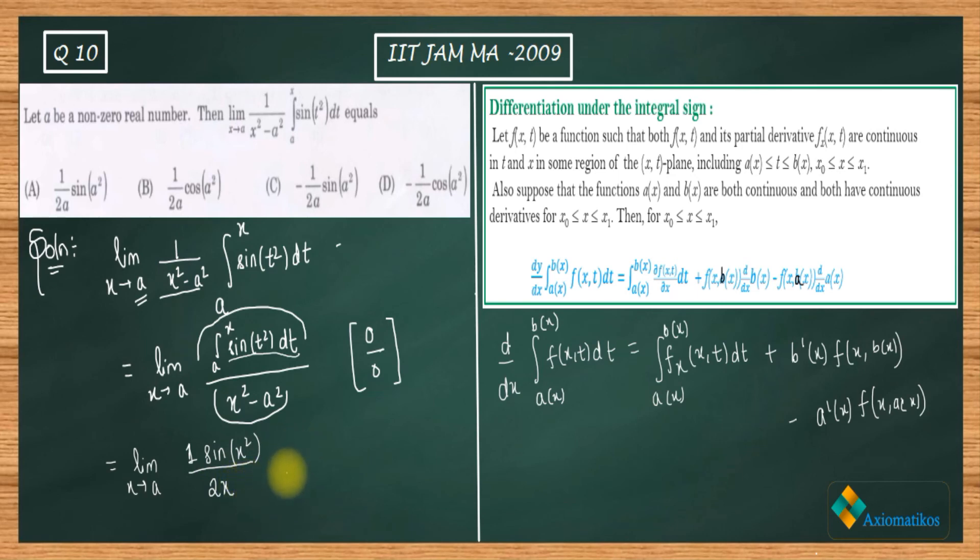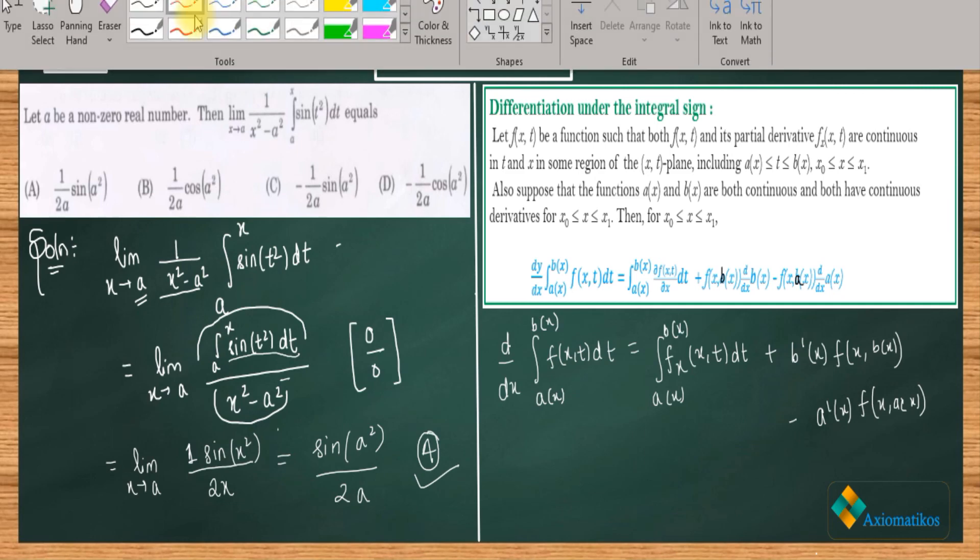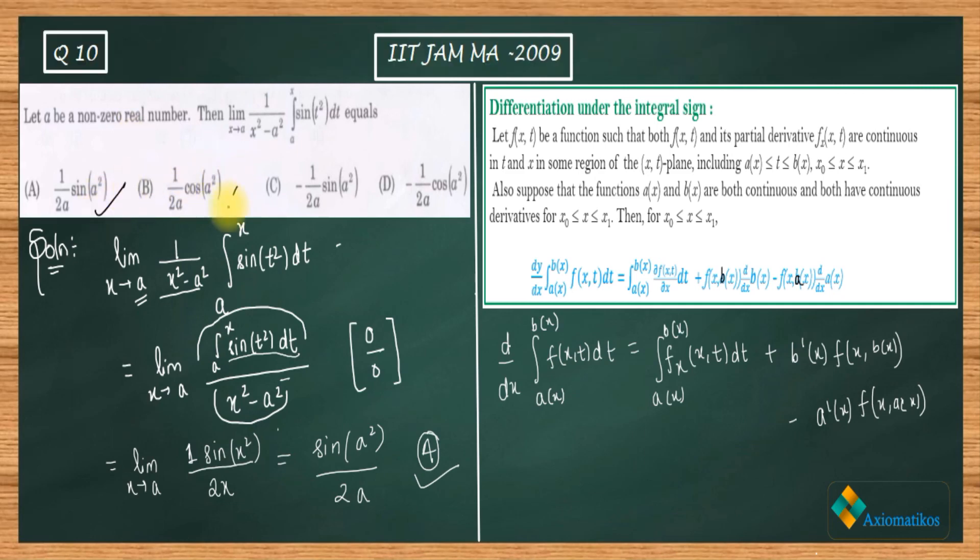Now if you place a here, you will get sine a squared over 2a. So your option A is the correct option and all remaining options are incorrect. A is correct, B is incorrect, C is incorrect, and D is also incorrect. This is how we can do it. It's a very easy question, not that much difficult. Thank you.